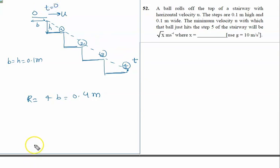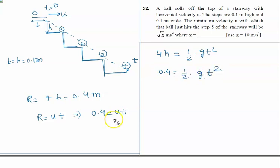In the x direction, that is R, it is given by u into t. This implies 0.4 equal to u into t. In the same time it will travel four h, so 4h equal to half gt square. h is 0.1, so 0.4 equal to half g t square.